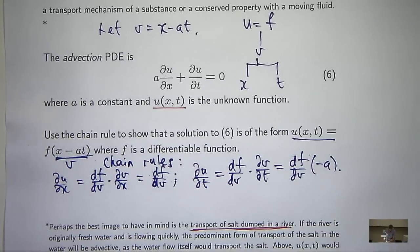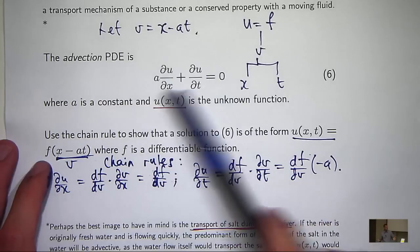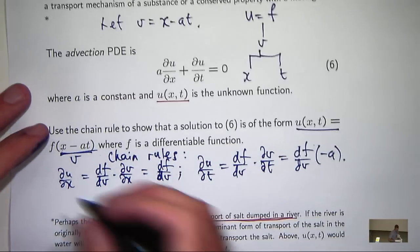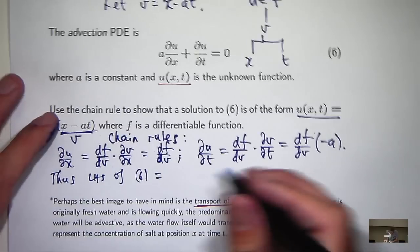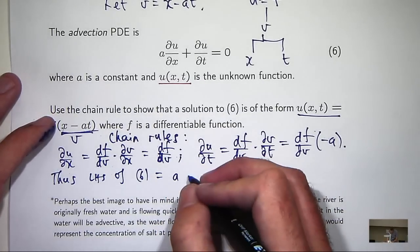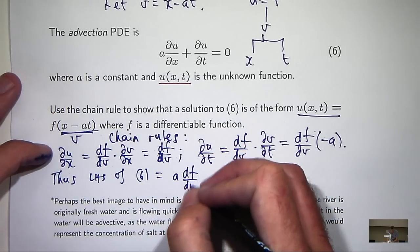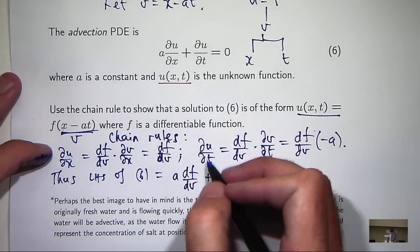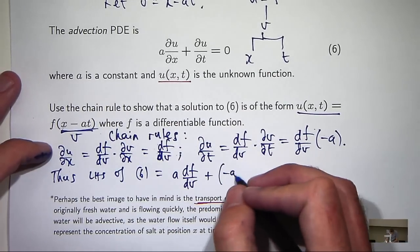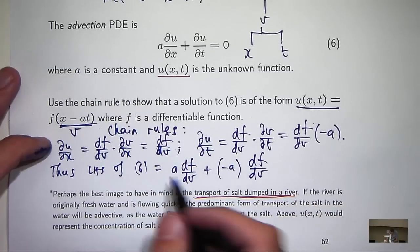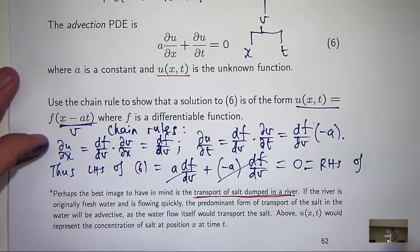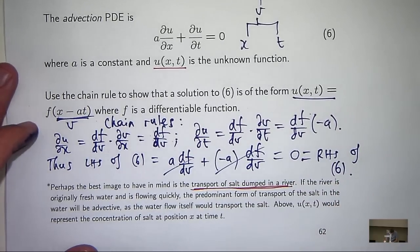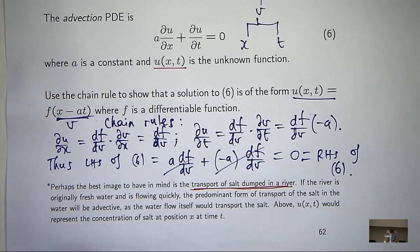So what I do now is just put those two derivatives into my advection equation, the left hand side of my advection equation, and see if they cancel everything out. All right, so it's going to be a times du/dx, which is this, plus this. And if you look closely, they'll just cancel each other off. And the equation holds.